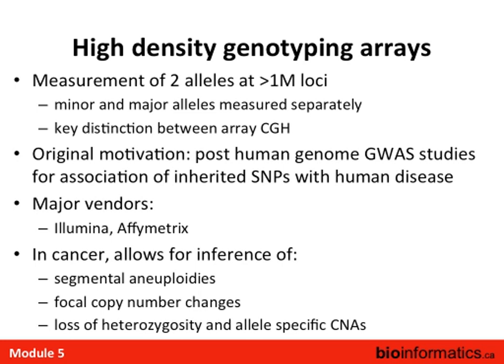The original motivation for designing these arrays was genome-wide association studies in the post-human-genome era, associating inherited SNPs with human disease. The major vendors were Illumina and Affymetrix. Conveniently for cancer, these arrays allow inference of segmental aneuploidies, focal copy number changes, loss of heterozygosity, and allele-specific copy number changes. Although developed for hereditary disease, the application to cancer has been quite fortuitous and has led to a lot of insights into the architecture of cancer genomes.